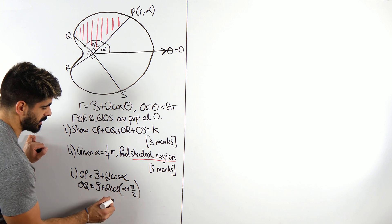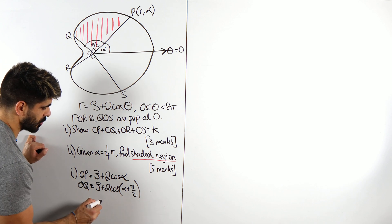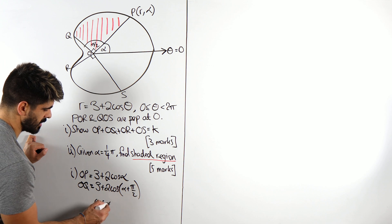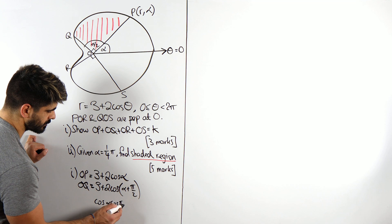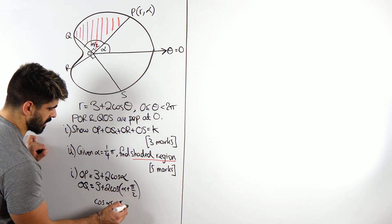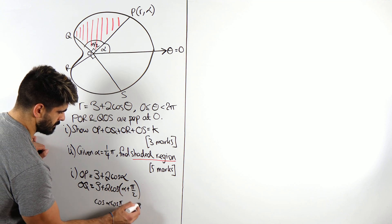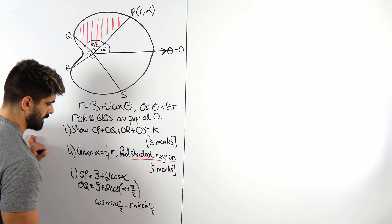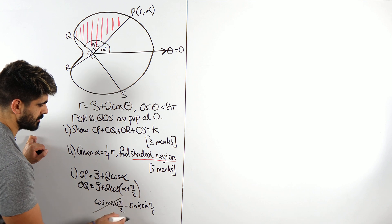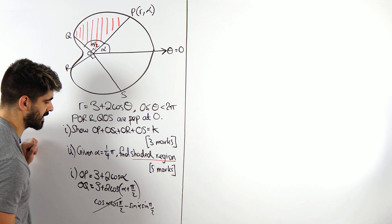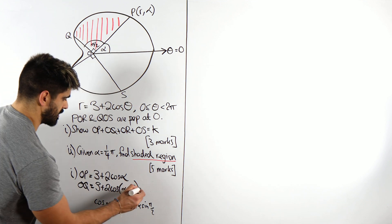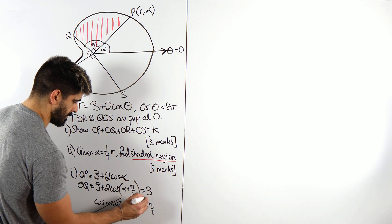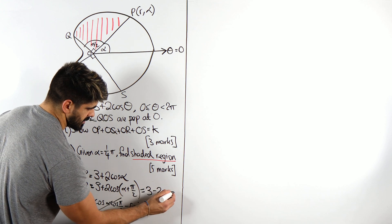We can prove that quickly using the cos addition rule. Cos of alpha plus pi over 2 expands to cos alpha cos(pi/2) minus sin alpha sin(pi/2). Cos of pi over 2 is 0, sine of pi over 2 is 1, so we get minus sine alpha. So OQ is 3 minus 2 sine alpha.